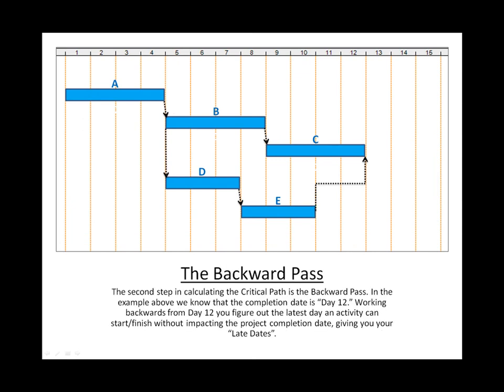The second step in calculating the critical path is the backward pass. In the example above, we know that the completion date is day twelve. Day twelve was the earliest activity C could complete when we did the forward pass. Working backwards from day twelve, you figure out the latest day an activity can start and finish without impacting the project completion date, giving you your late dates.